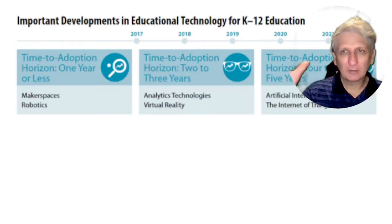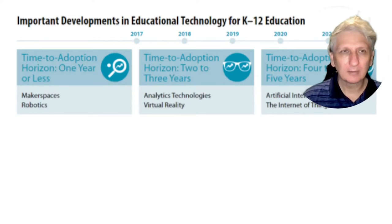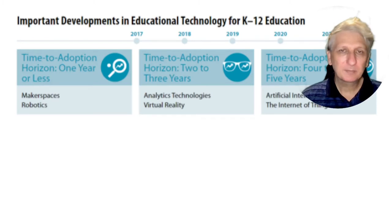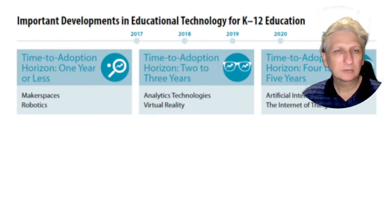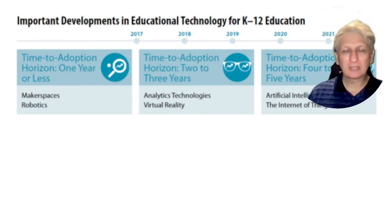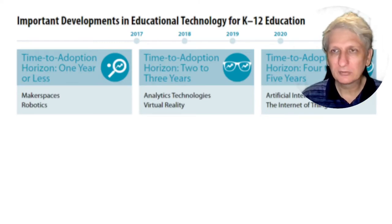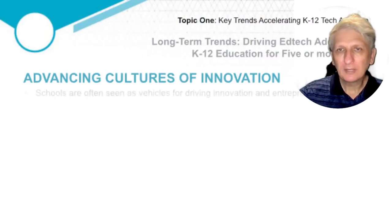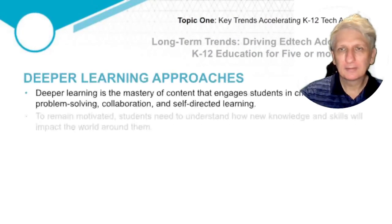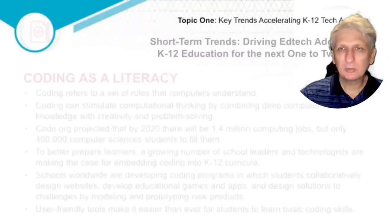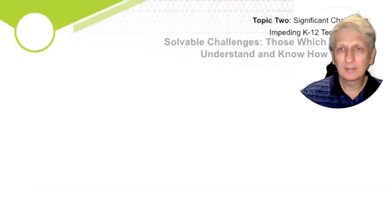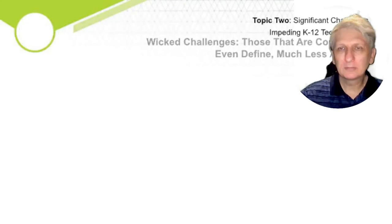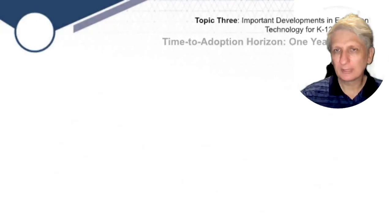The third aspect of these predictions looks at technologies appearing on the horizon. About five years ago, the main predictions included maker spaces in schools, robotics, analytics technology, virtual reality, artificial intelligence, and the Internet of Things. There are various other examples and implications of these changes available to explore.